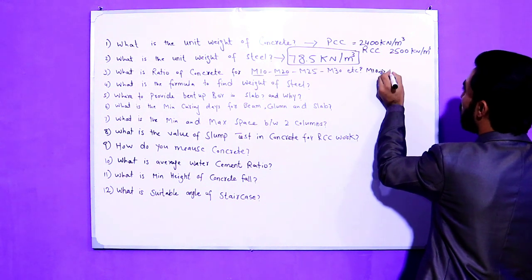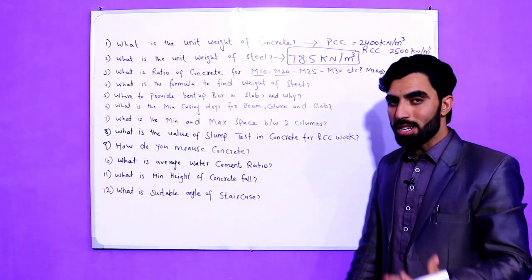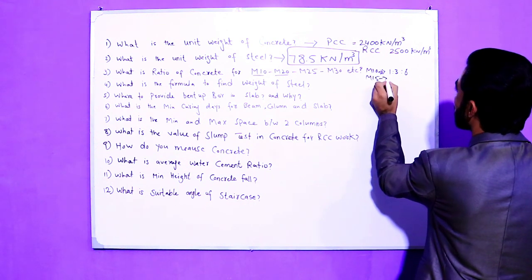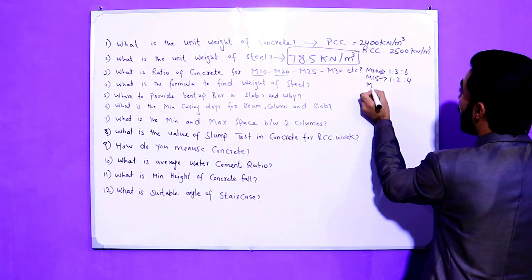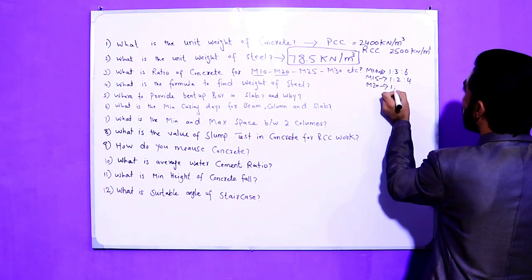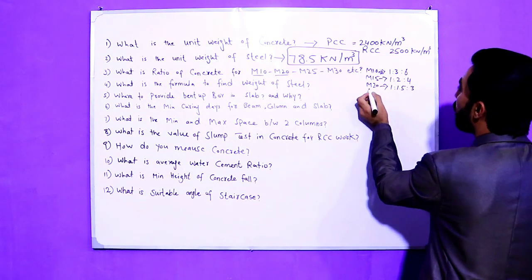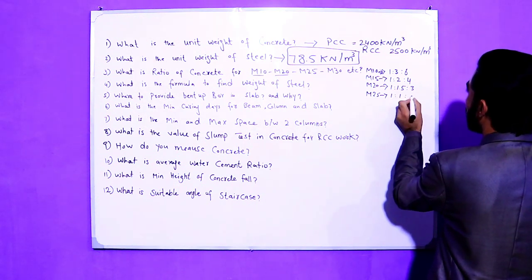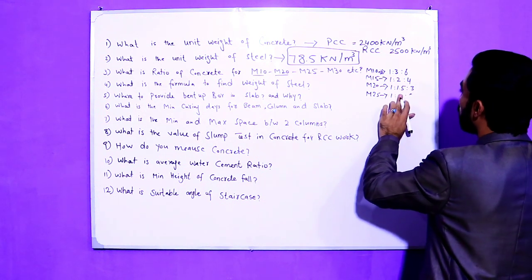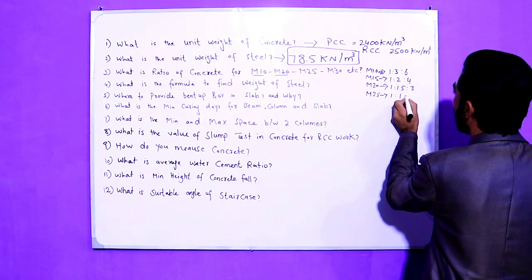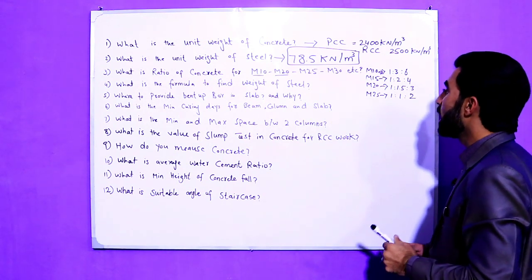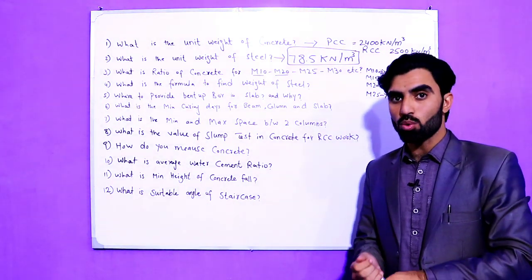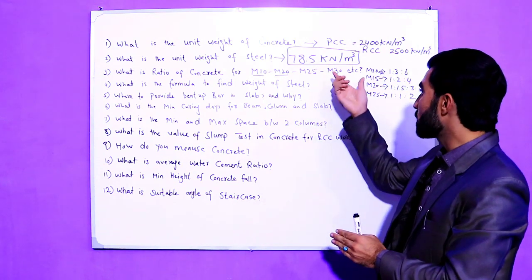For M15 the ratio is 1:2:4. For M20 it is 1:1.5:3. For M25 it is 1:1:2. For M30 and above, there is a design mix — you will design the concrete for other ratios specially.